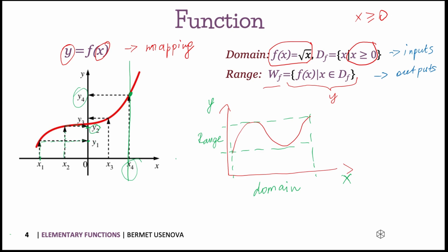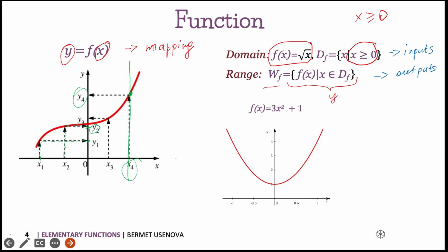We can have a look also on a different example. Here, this function 3x squared plus 1. For this particular function, we can use any number. It's not a square root, we can use negative and positive numbers. So in this case our domain will be all real numbers.